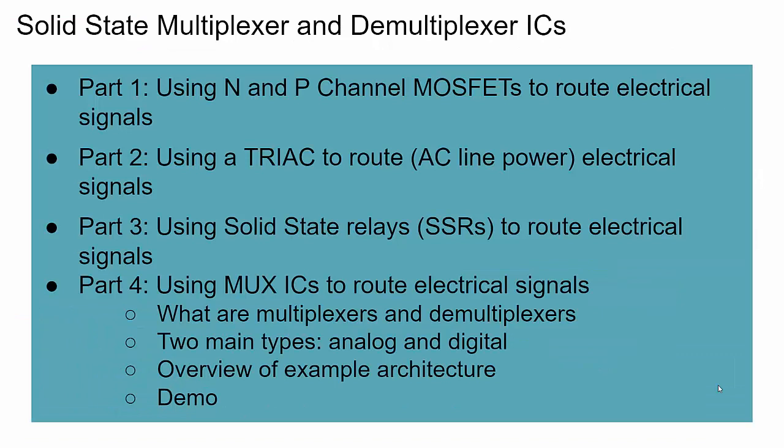This is a four-part series and we're on part four. In part one we talked about N and P channel MOSFETs using them as discrete devices to route electrical signals. In part two we talked about Triacs — a little known solid state switching device that can be used for switching AC line power. In part three we went into using solid state relays or SSRs to route electrical signals. In part four we're going to talk about multiplexer and demultiplexer ICs, sometimes called mux or demux.